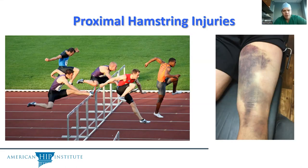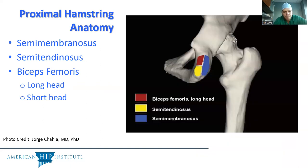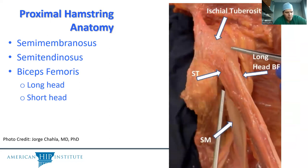Switching gears now for something completely different, we're going to move posteriorly to the proximal hamstring. The proximal hamstring's origin is on the ischial tuberosity, and it has a unique anatomy where there is the semimembranosus, semitendinosus, and two heads of the biceps femoris. The conjoint tendon — being the combination of the semitendinosus and the long head of the biceps femoris — will rotate and insert more medially, with the semimembranosus inserting a little more laterally. Recreating this rotation is one of the goals of anatomic repair.